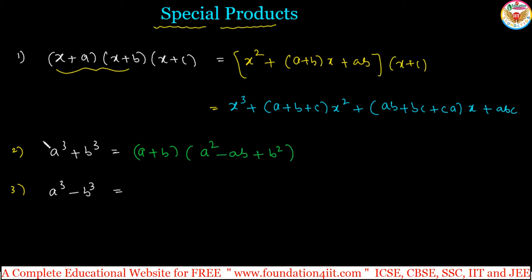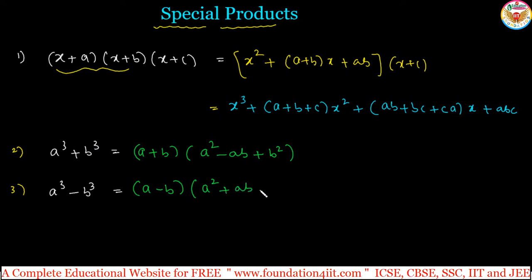If you multiply it again, note that the plus becomes minus. Just remember: a cubed minus b cubed equals (a minus b) into (a squared plus ab plus b squared) — here all terms inside are positive.